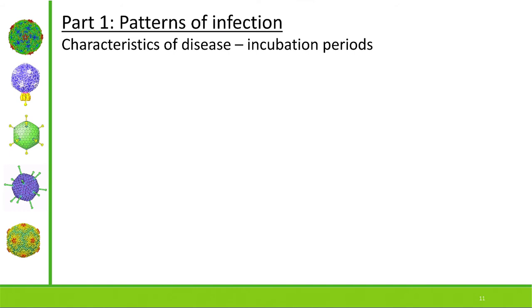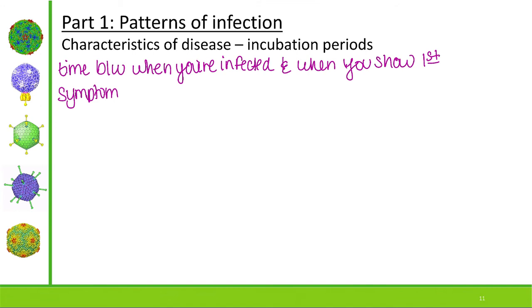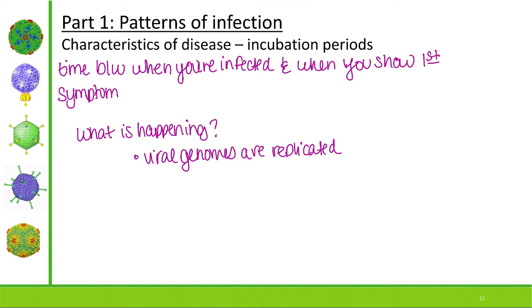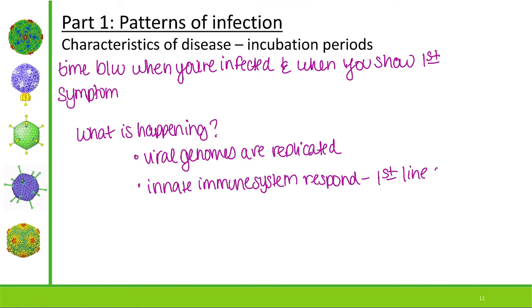Another important characteristic of disease is the incubation period — the time between when you're infected and when you show your first symptom. During this time, viral genomes are being replicated as cells are hijacked to make more virus. Then the innate immune system begins to respond. The innate immune system is our first line of defense, and it is not specific.